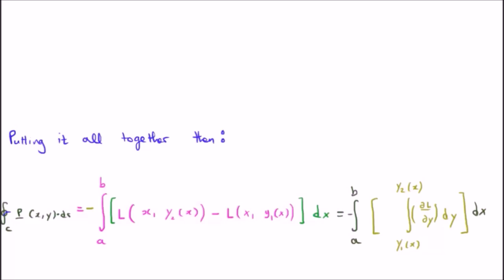Putting it all together, the closed line integral in an anticlockwise direction of the vector field P, which only has an i-hat component, dot dr, is equal to minus the integral with respect to x from a to b of L(x, y2) minus L(x, y1).